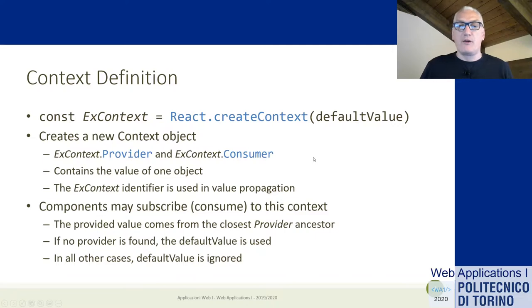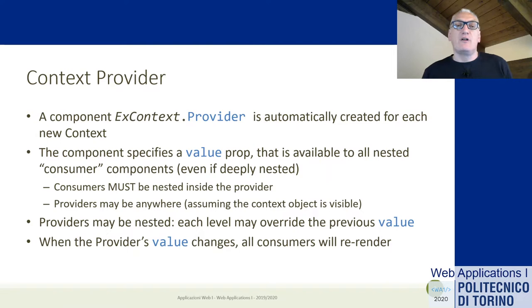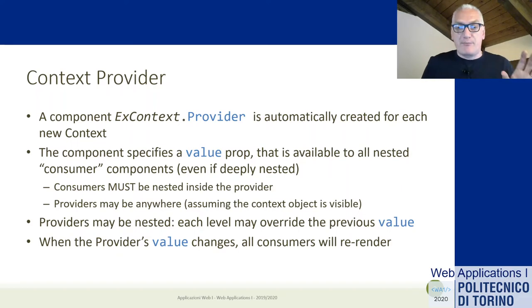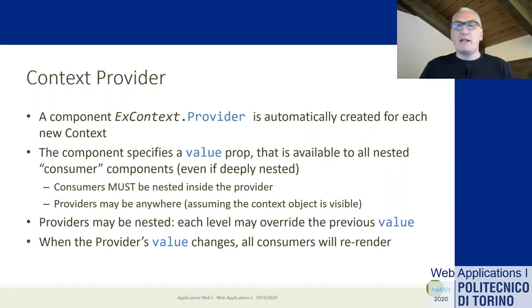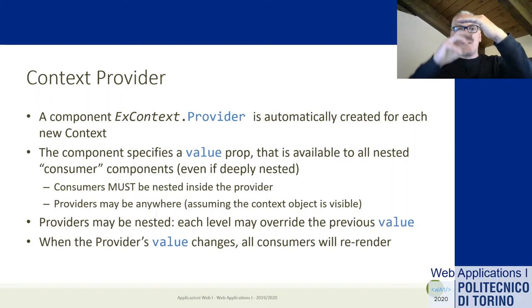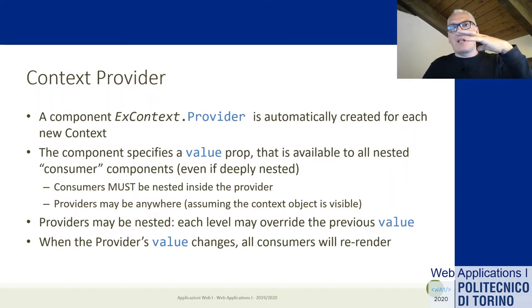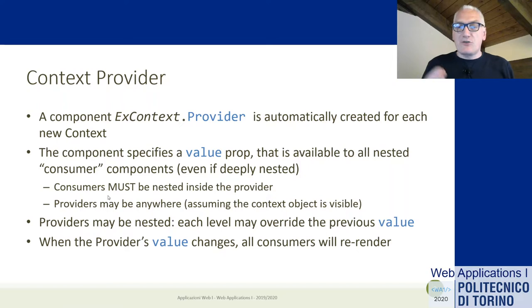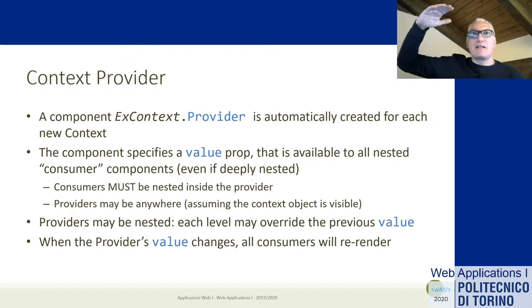Creating the context doesn't do anything to your application right now. To store information, we instantiate a context provider component — this component is already defined when you create a new context. It receives one prop called 'value', which can be set to any object you want. The context provider acts as a container for all the DOM elements inside it. Every React element inside this provider may access that value. A component that needs to access the value must be nested inside the provider.